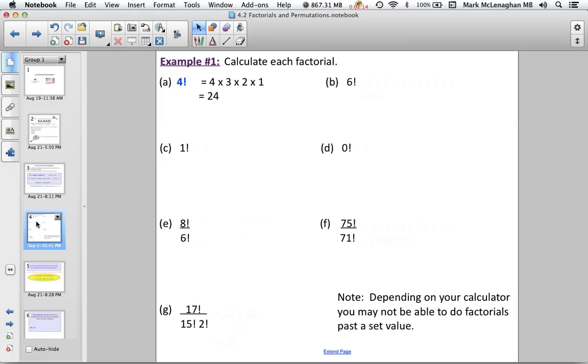Okay, so some examples. So here we have four factorial, so like I said, it's four times three times two times one. Multiply those together, their product is 24. Six factorial is six times five times four times three times two times one, which is 720. Obviously one factorial is just one.